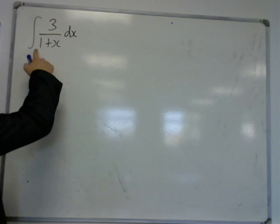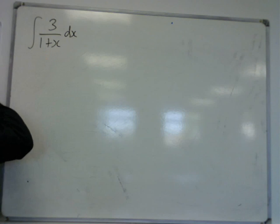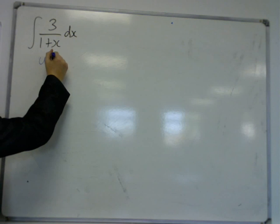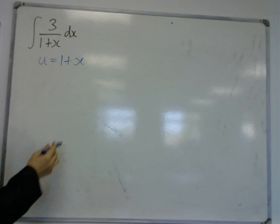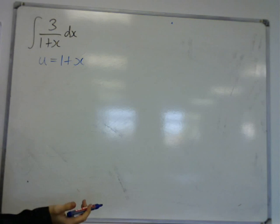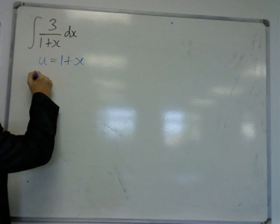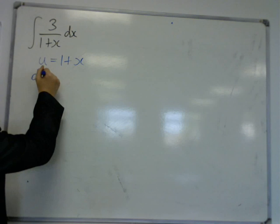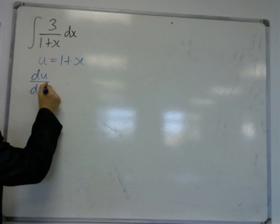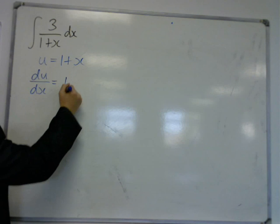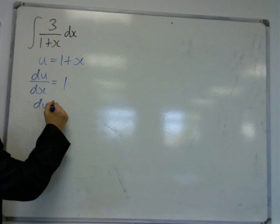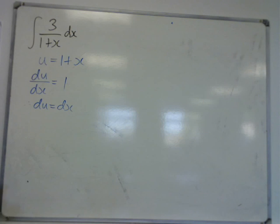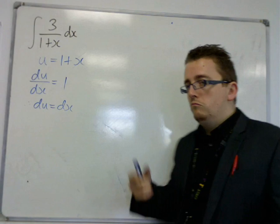So, the problem here is the 1 plus x. So, we do u is equal to 1 plus x. That would be the substitution to make. There isn't really much other substitution you could make. We need a replacement for dx, like we did in the other examples. So, du by dx is 1. Then if I multiply both sides by dx, I get du is equal to dx. So, it's a nice, easy swap.